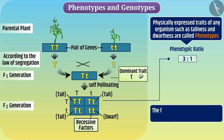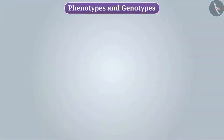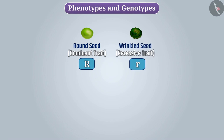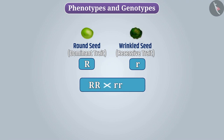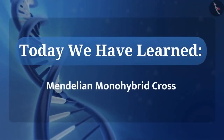The factors or genes that regulate the traits are called genotypes. The genotypic ratio of these plants is 1 TT : 2 Tt : 1 tt. Suppose the round trait expressed as R is dominant for seeds and the wrinkle trait expressed as r is recessive. What will be the result of breeding between a plant having RR genotype and a plant having rr genotype? Try this with the help of the Punnett square. Today we have learned Mendelian monohybrid cross.